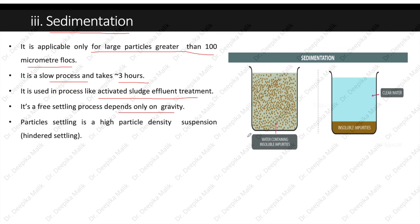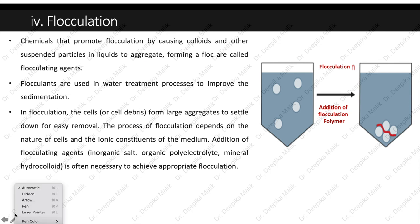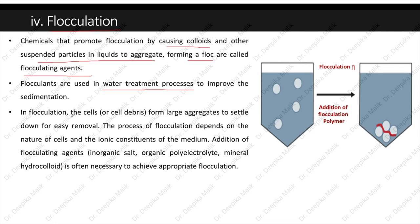After filtration, centrifugation, and sedimentation, another method for solid-liquid separation is flocculation. Chemicals that promote flocculation by causing colloids and suspended particles to aggregate forming a floc are called flocculating agents. Flocculants are used in water treatment to improve sedimentation. In flocculation, cells or cell debris form large aggregates to settle for easy removal. The process depends on the nature of cells and ionic constituents of the medium. Addition of flocculating agents such as organic salts, organic polyelectrolytes, or mineral hydrocolloids is often necessary. The flocculating agent connects individual particles, making them denser so they settle at the bottom.